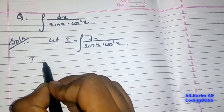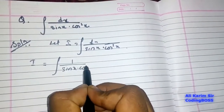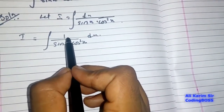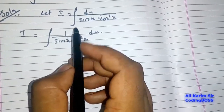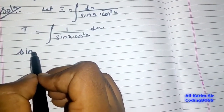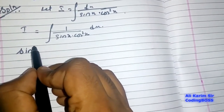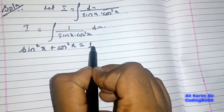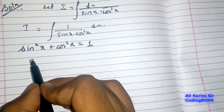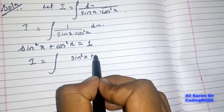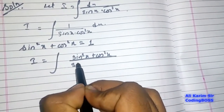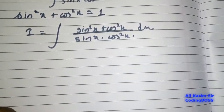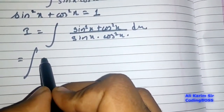Let's separate the term — integration of 1 upon sin x into cos squared x. I have only removed the dx from the numerator, so it remains only 1. If you remember the Pythagorean identity: sin squared x plus cos squared x equals 1. So we can apply this formula, and I is equal to integration of sin squared x plus cos squared x upon sin x into cos squared x, dx.